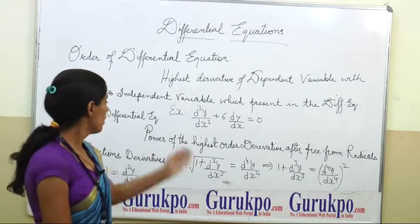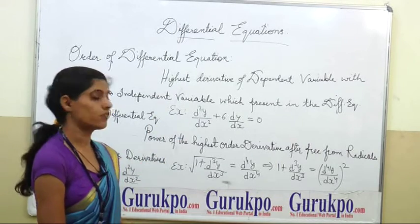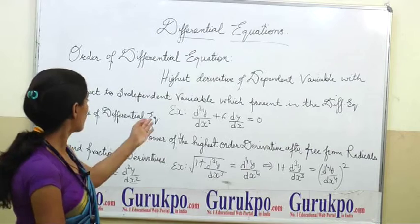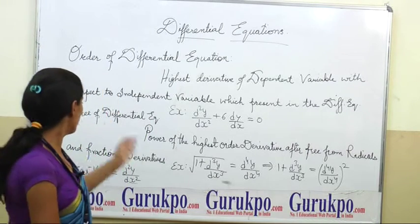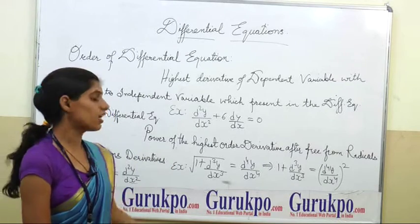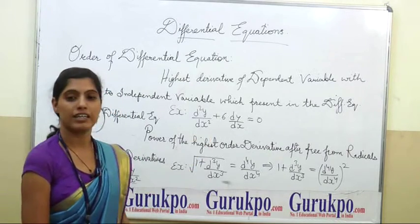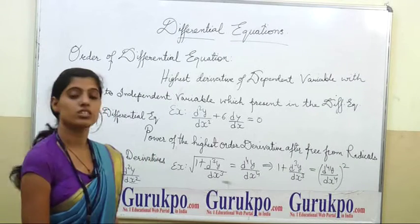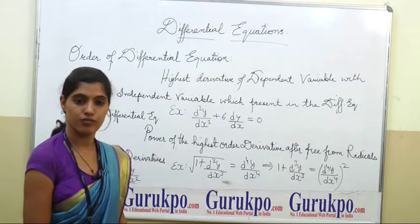For example, d²y/dx² + 6 dy/dx = 0. Here the order is 2. Now, degree of differential equation: the power of the highest order derivative after freeing from radicals and fractions is called the degree of the differential equation.